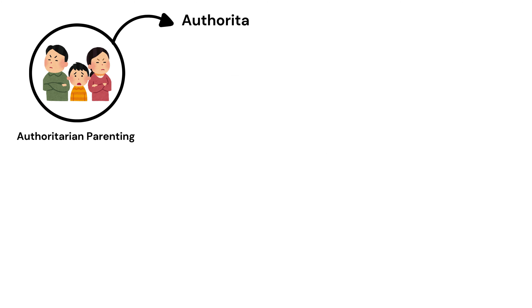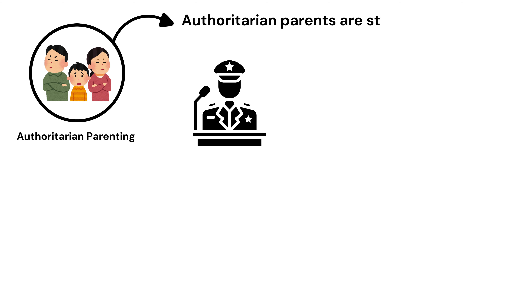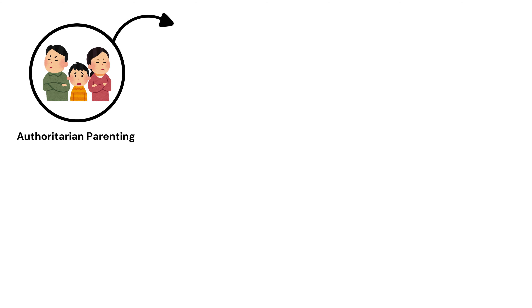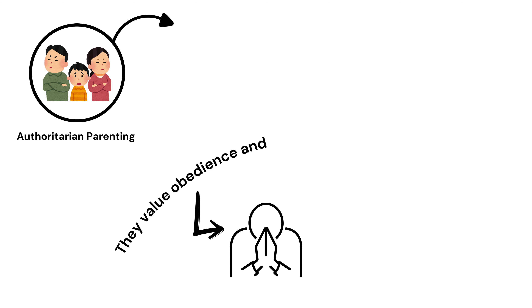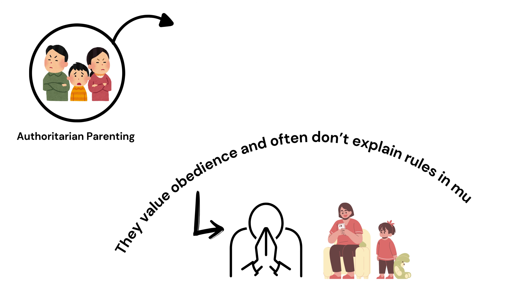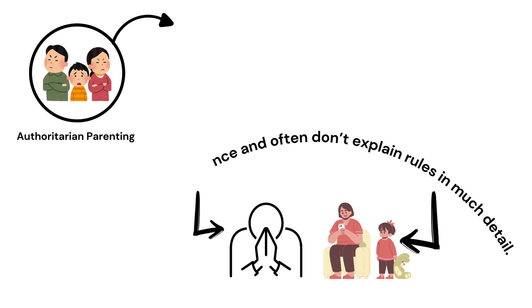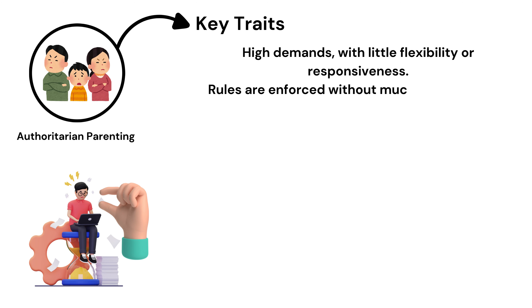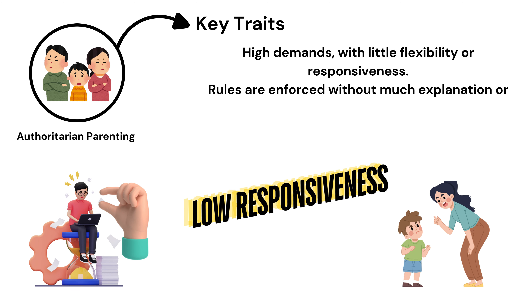Authoritarian Parenting. Authoritarian parents are strict, with high demands and low responsiveness. They value obedience and often don't explain rules in much detail. Key Traits: High demands, with little flexibility or responsiveness. Rules are enforced without much explanation or room for negotiation.